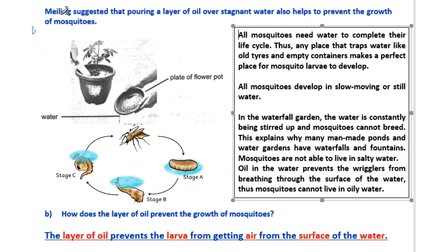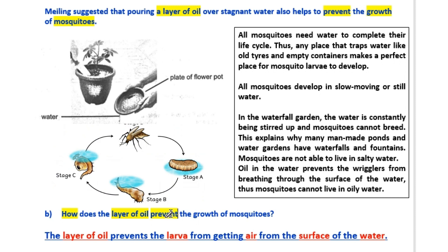Myling suggested that pouring a layer of oil over stagnant water also helps to prevent the growth of mosquitoes. How does the layer of oil prevent the growth of mosquitoes? The layer of oil prevents the larvae from getting air from the surface of the water.